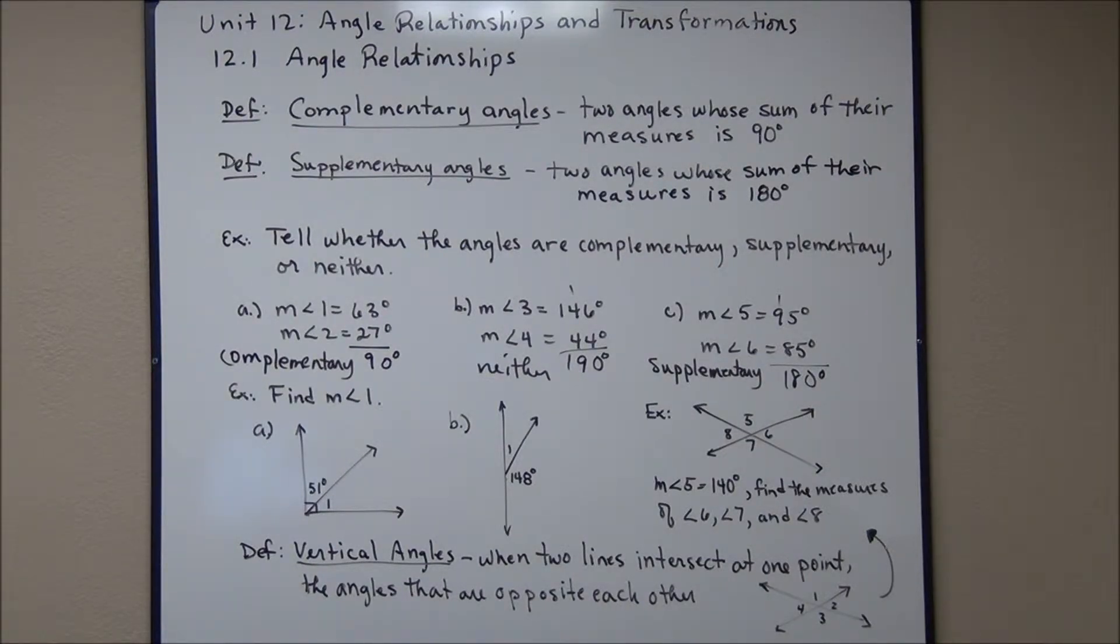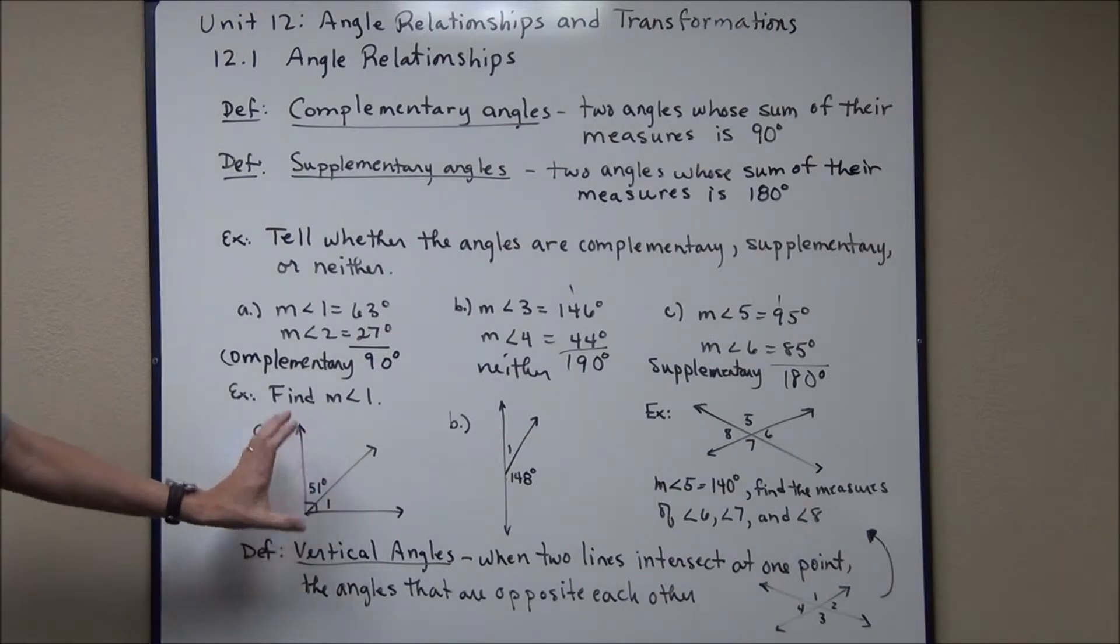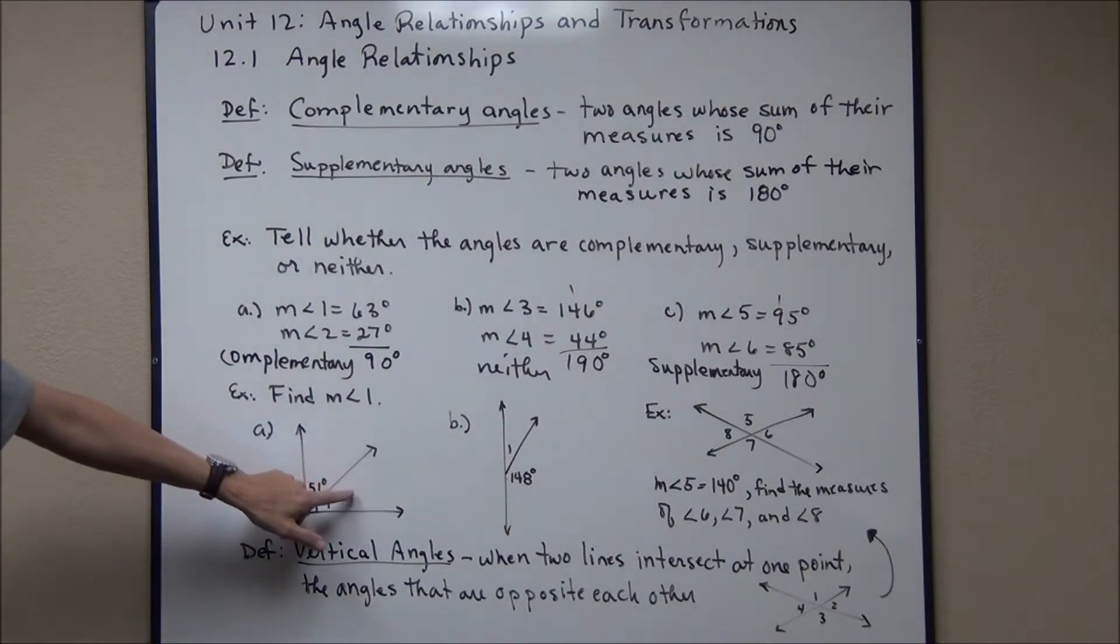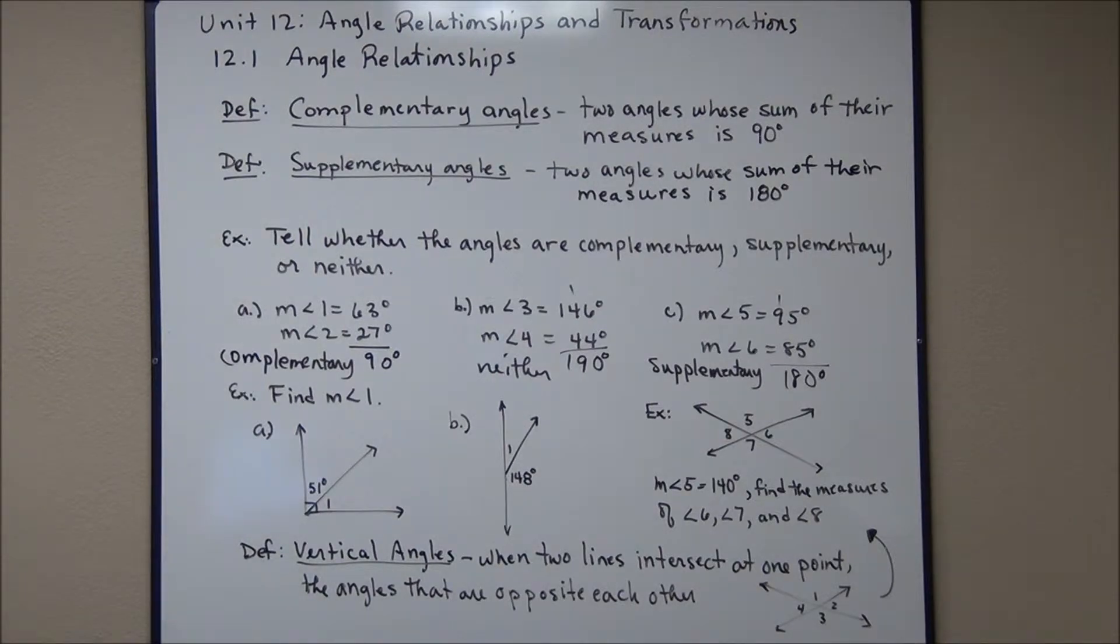Now one thing about Complementary Angles, because they add up to 90 and we know 90 degree angles are right angles, if we have a drawing, in this case in this next example, where we have a right angle, we know that these two angles combine to 90 degrees. That means these two angles are going to be complementary. Now we know one of the angles is 51 degrees, we're asked to find the measure of angle one. That's this angle right here.